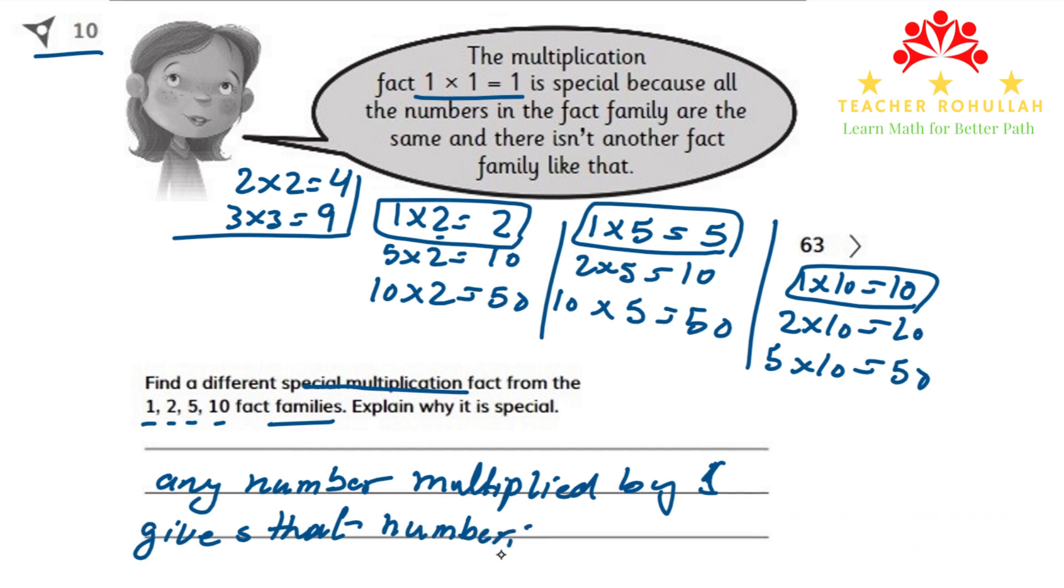So this is special because other numbers multiplied by a different number does not give us the same number. For example, if we multiply 3 by 2, we do not get 2. We get 6. Or if we multiply 5 by 2, we do not get 2. We get 10.